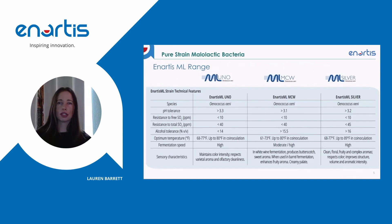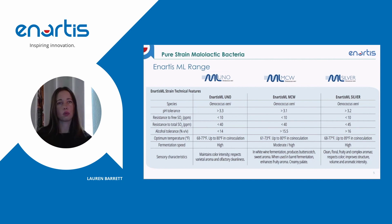Here we have the Ennartis ML range, and each strain has different ideal conditions of growth. The success of malolactic fermentation depends on wine parameters and the choice of the most suitable strain. Consider the addition of malolactic bacteria-specific nutrients, especially in harsh wine environments. With Ennartis ML Uno, this strain provides a quick-starting and complete malolactic fermentation in both white and red wines under normal conditions, respecting the organoleptic characteristics of wine and reducing the risk of uncontrolled fermentation, producing clean, varietal wines.